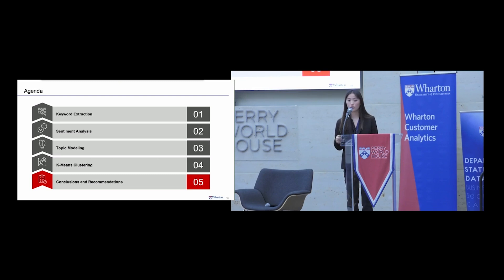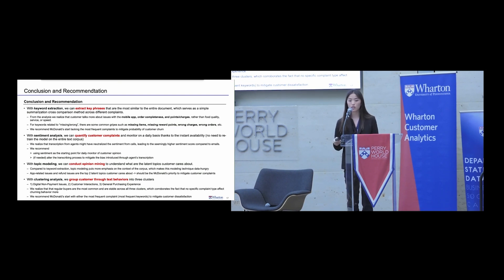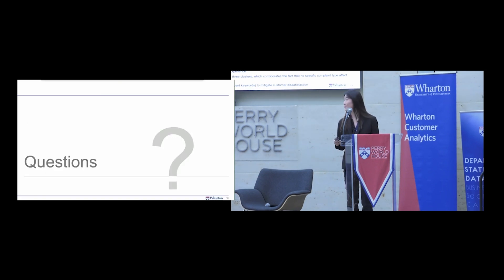After running these four models, we arrived at several business insights. Keyword extraction revealed key phrases and we recommend McDonald's tackle the most frequent complaints about app and point charges. Sentiment analysis provided a quantifiable metric for a back-end database. Topic modeling identified the top seven topics customers are concerned about and enables automated complaint categorization. Clustering analysis grouped customers by textual behaviors into three major clusters: digital, product purchasing, and McDonald's. Thank you for listening — I'm open to questions.